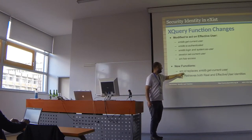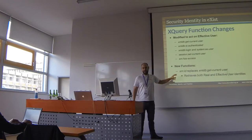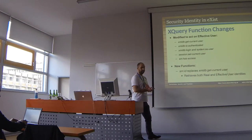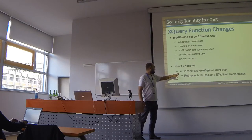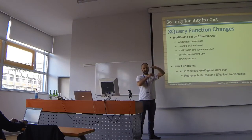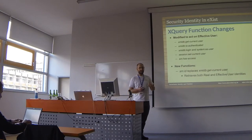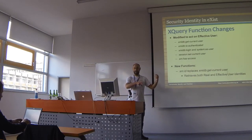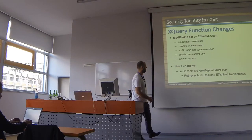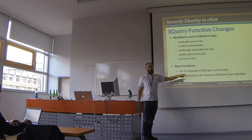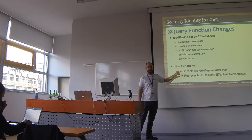We now have the sm:id function, pulled straight out of Unix. If you're on Unix and type 'id', it tells you the real user, and if there's an effective user, it tells you that too. This sm:id function returns a little XML document telling you the real user and, if the effective user is different, what that is. It also tells you their groups, because you can make the effective user basically be the real user augmented with another group. Calling sm:id effectively deprecates xmldb:get-current-user, because it gives you that information plus more.